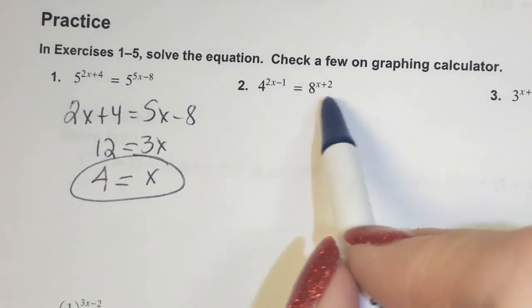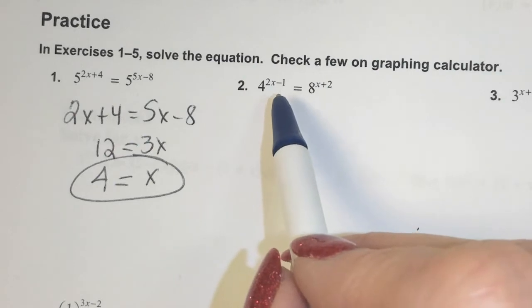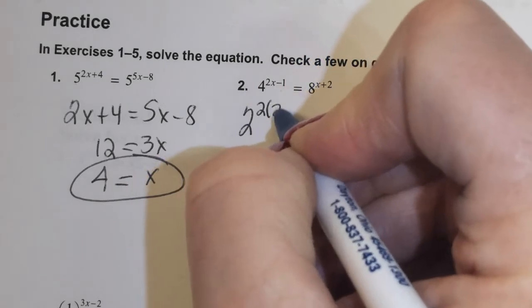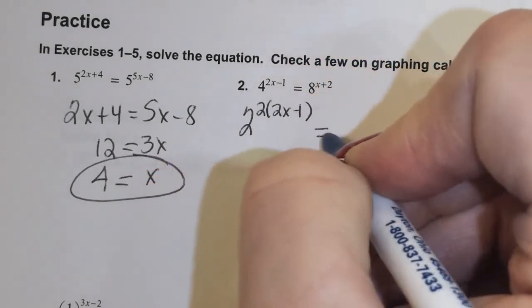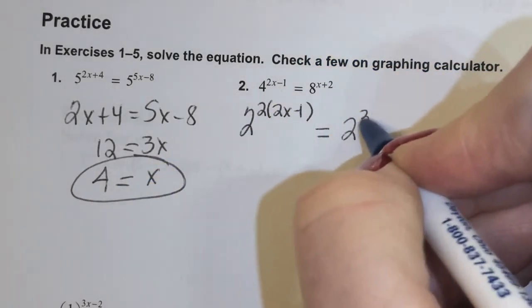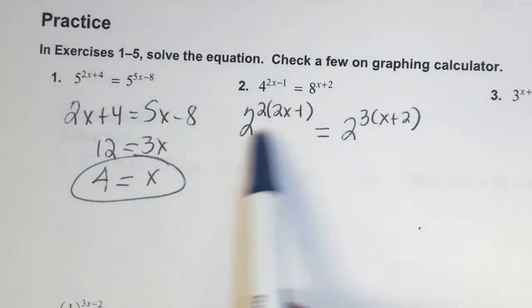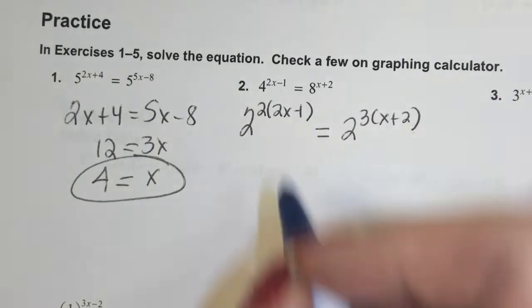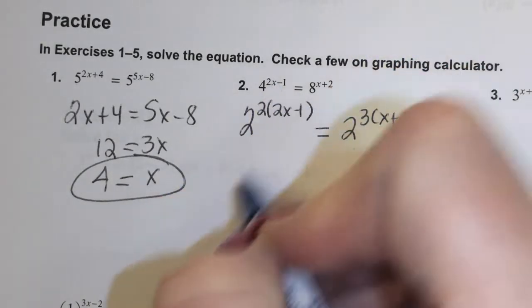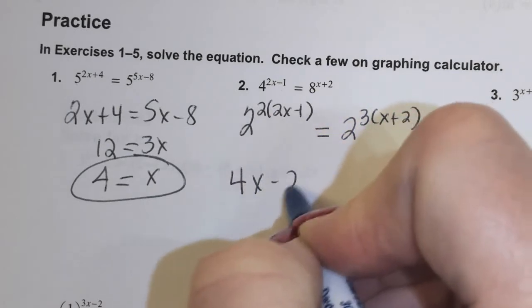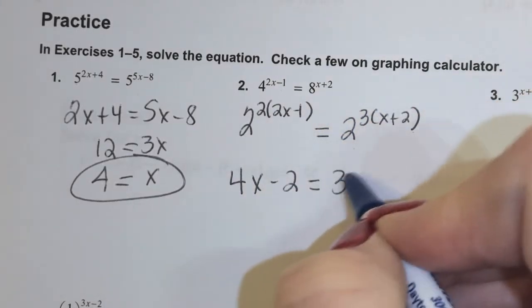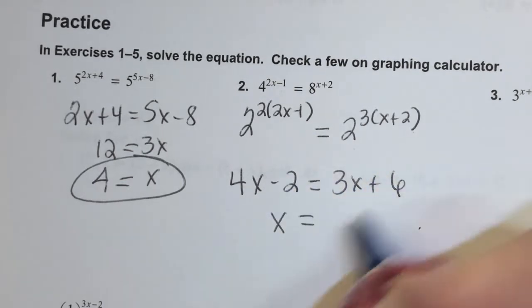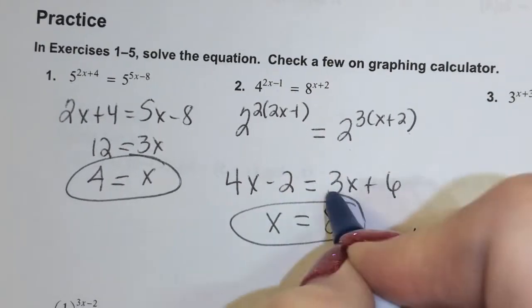On this one we don't have like bases to start with, so I'm going to have to get like bases. 4 is going to be 2 squared, still with the 2x minus 1. 8 is going to be 2 cubed, still with the x plus 2. We need like bases in order to set the exponential parts equal. Distributing, I've got 4x minus 2 equals 3x plus 6. Subtract the 3x and you get x; add the 2 and you get 8. That's our solution.